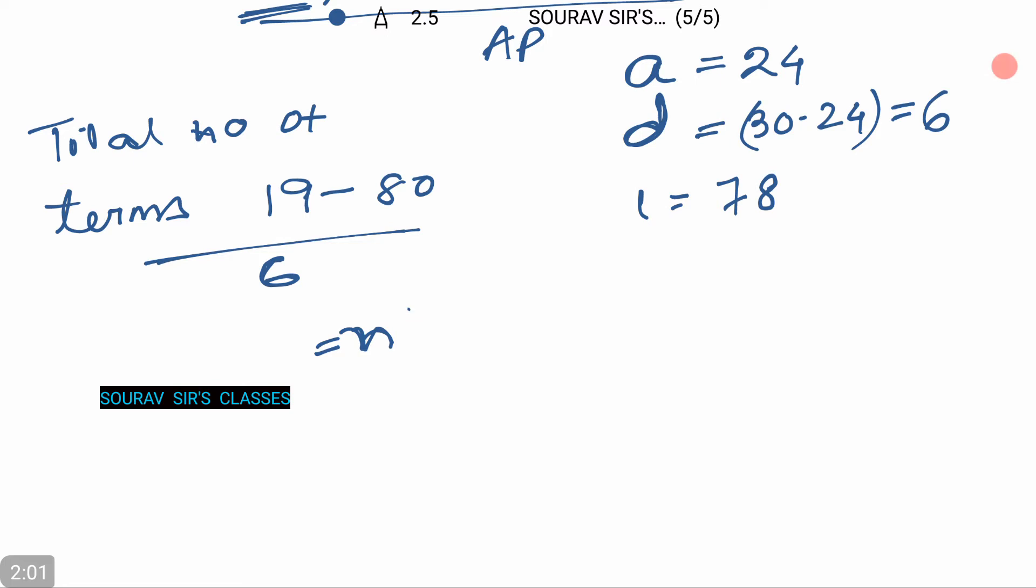So the Nth term we can get it as A plus N minus 1 into D. We have the value of A, D, and the Nth term, that is the last term. We have the value, that is 78.